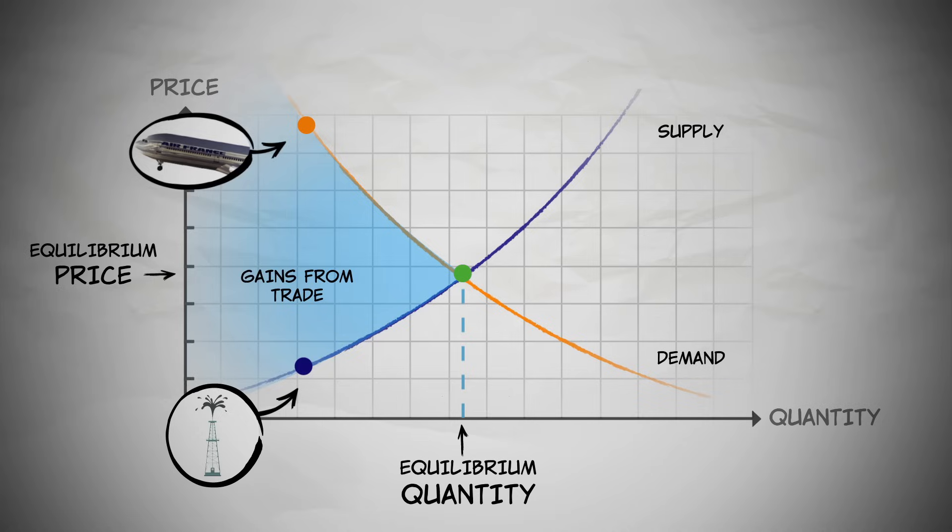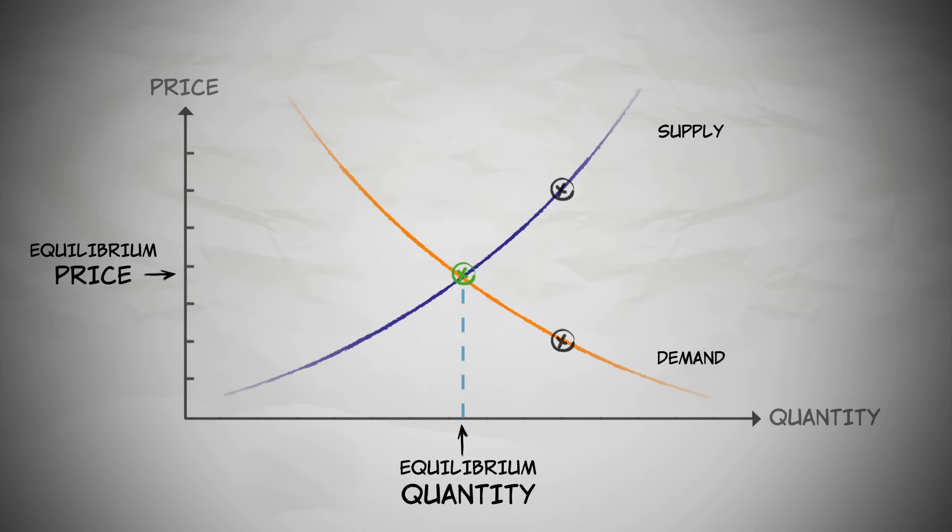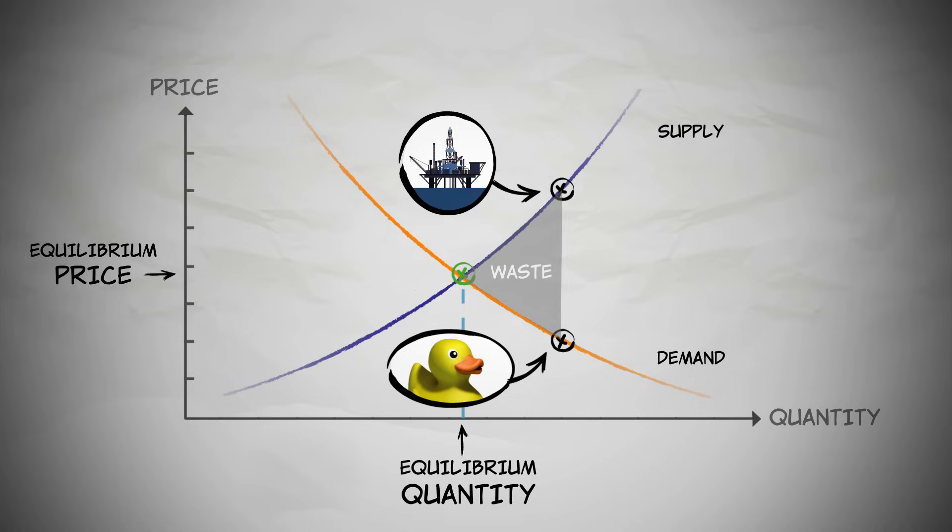If the quantity exchanged were greater than the equilibrium quantity, for example, we would be drilling deep and expensive oil wells just to produce more rubber duckies, and that would be wasteful.